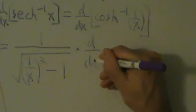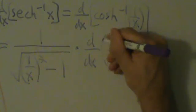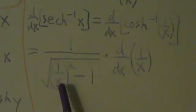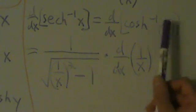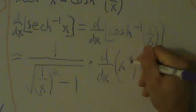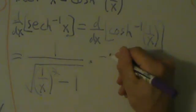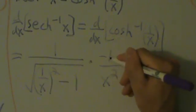Now let's find the derivative of the little guy. The little guy is 1 over x, which is just x to the negative 1. So by the power rule, the derivative is negative 1 times x to the negative second power, which is the same thing as negative 1 over x squared.